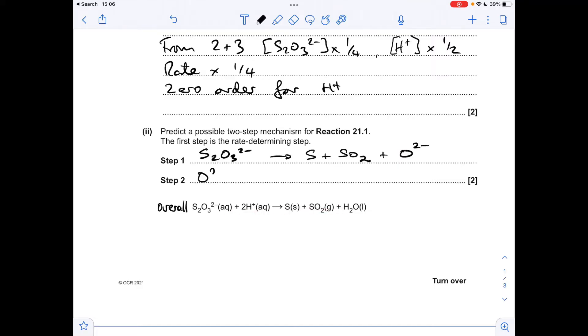We still need some H-plus ions, so we'll bring them in to step two. And we still need to make H2O. Well, we can make that from those ions, and it works for charge as well. 2 plus 2- leaves no overall charge on the left, and obviously H2O has no charge. So that is one way to do it.